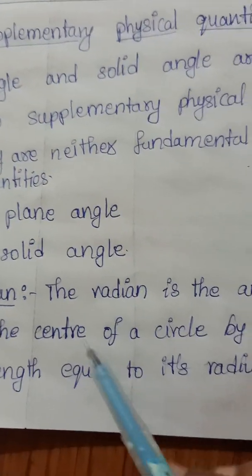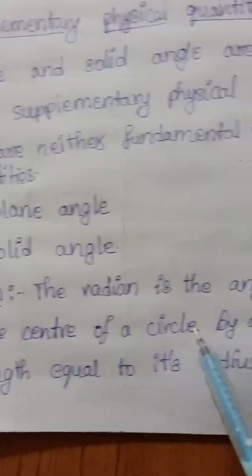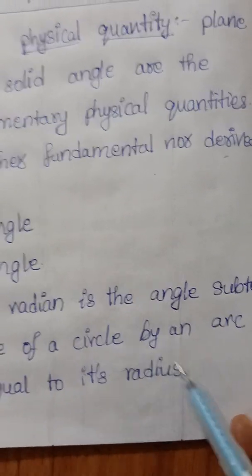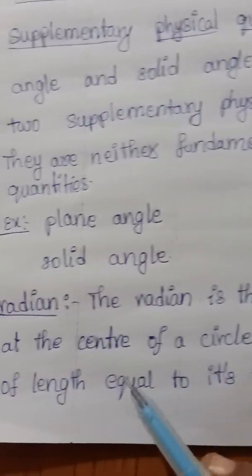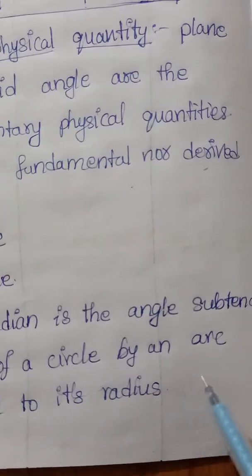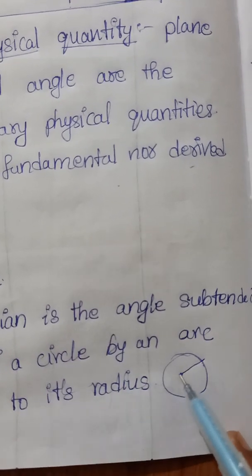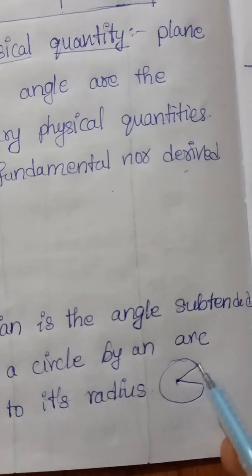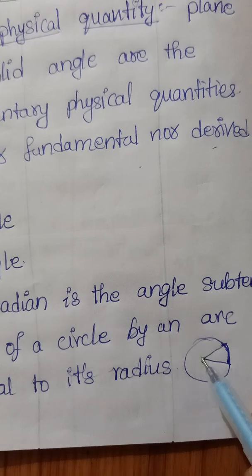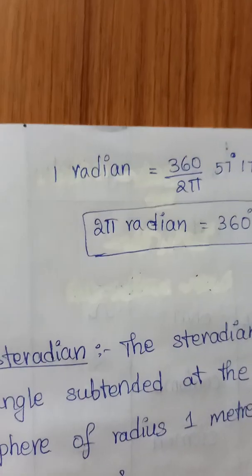What is meant by radian? Radian is the angle subtended at the center of the circle by an arc of length equal to its radius. If you take the circle, from the center, the arc of length should be equal to the radius of the circle.